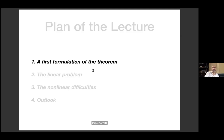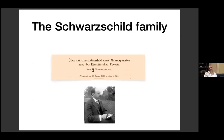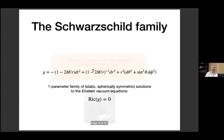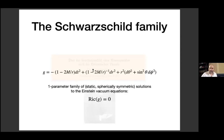I have to introduce the Schwarzschild metric. This is Schwarzschild's original paper, published in January 1916. This is the Schwarzschild metric — the first nontrivial solution of the Einstein vacuum equations to be written down. It's a one-parameter family of static, spherically symmetric solutions of Ricci curvature equals zero, describing a Lorentzian four-manifold whose Ricci curvature is equal to zero.